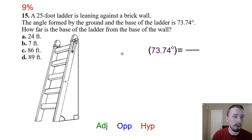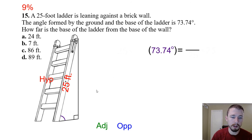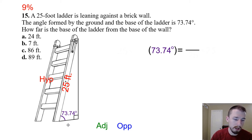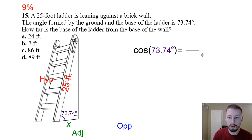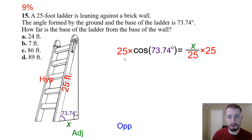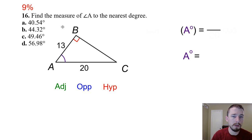Number fifteen — a 25-foot ladder leans against a brick wall. The hypotenuse is 25 feet. The angle formed by the ground and the base of the ladder is 73.74°. We want the horizontal distance from the base of the ladder to the base of the wall — that's the adjacent side. Using cosine: cos 73.74° = x / 25. Multiply both sides by 25: x = 25 cos 73.74° ≈ 7 feet.